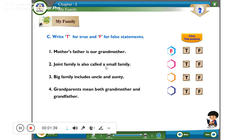Joint family is also called as small family. Already said that there are three types of families: small, big, joint. Joint families differ.